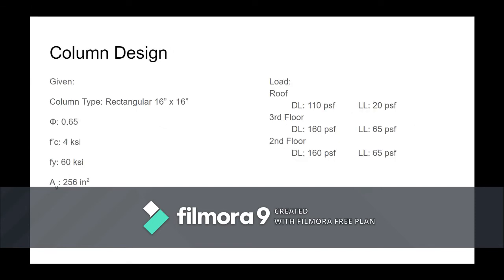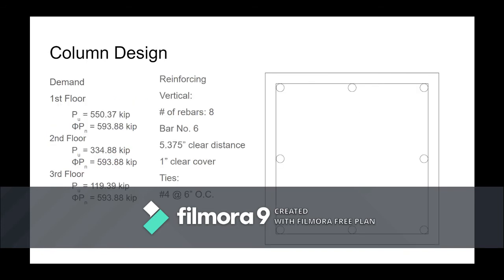Hi, my name is Camille Reyes and I will be talking about the column design. The column is a rectangular design measuring 16 by 16 inches. Concrete strength is 4 ksi and rebar strength is 60 ksi. The roof dead load is 110 PSF and live load is 20 PSF; typical floors have dead load 160 PSF and live load 65 PSF. Due to the California location, seismic requirements apply: rebar spacing is limited to 6 inches and tie bar spacing is also limited to 6 inches. The best design for this 16 by 16 inch column uses eight number six rebars at 5.375 inches apart with a clear cover of one inch, applied to all columns.